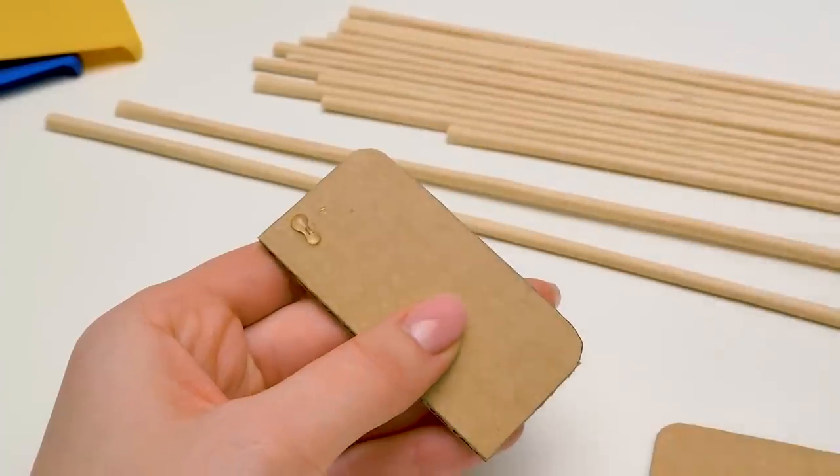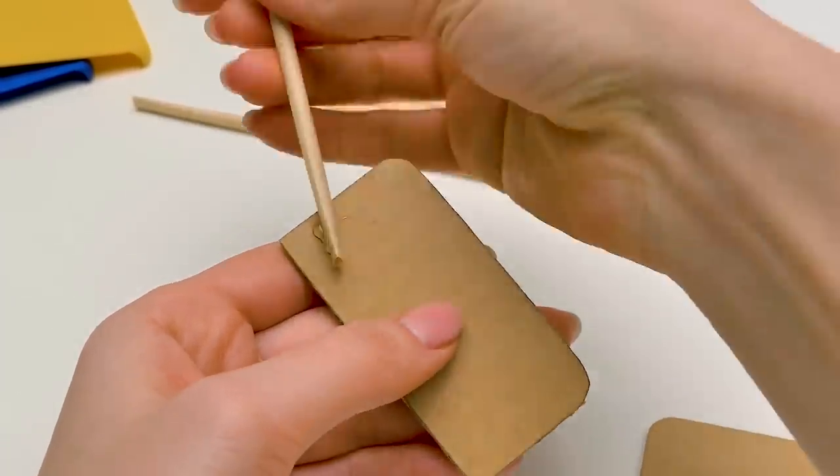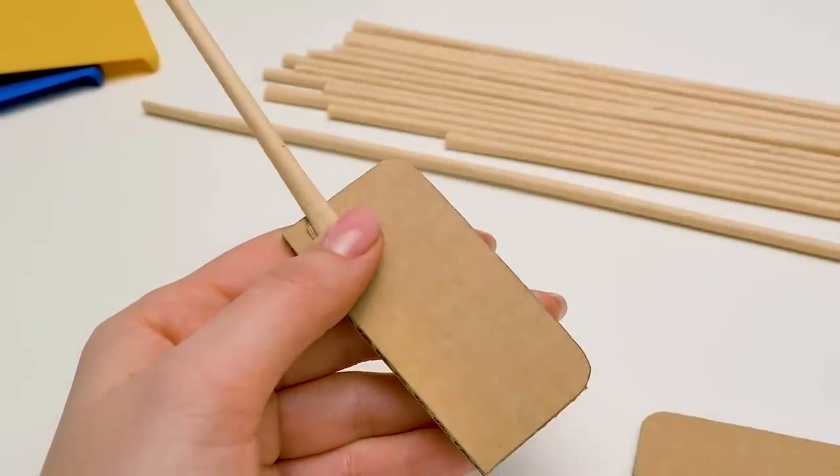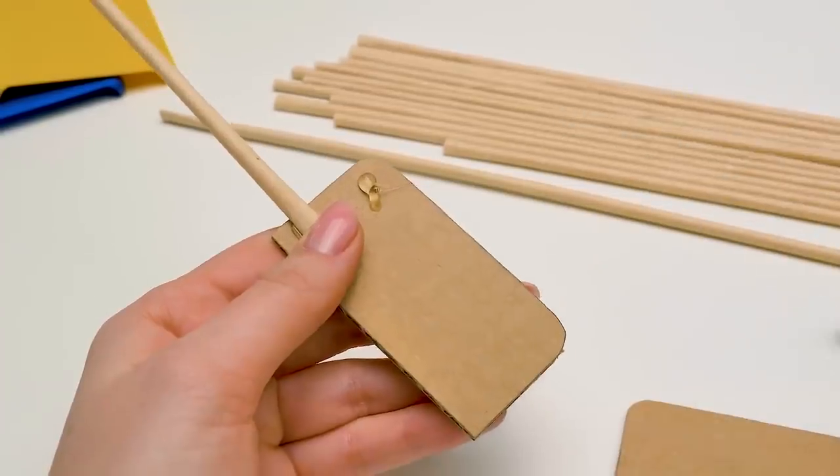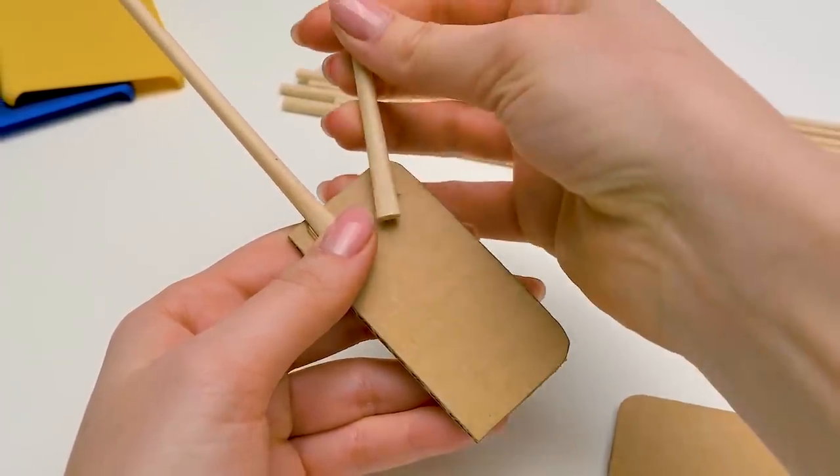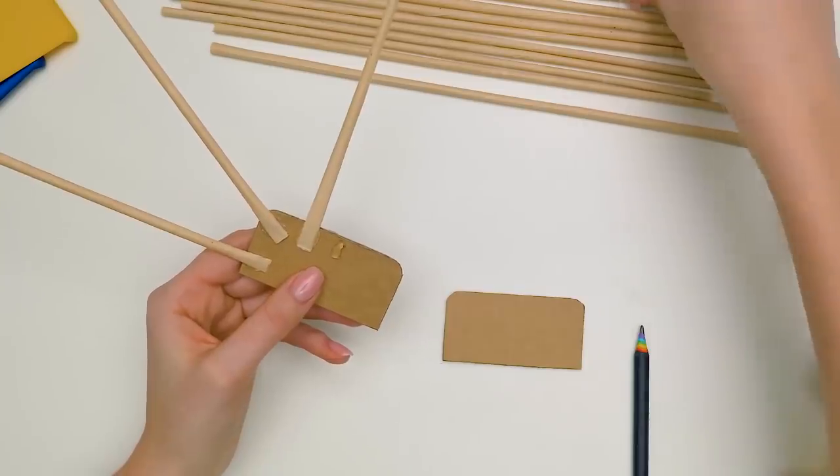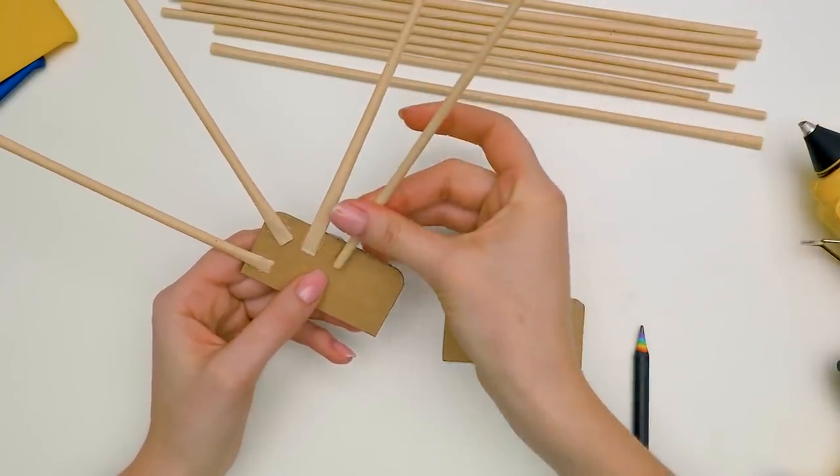Then apply some glue to one of the pieces. Just a bit. And glue one paper stick to it. Glue the next stick next to it. But make some space between them. See? Like that. Glue. And press. Glue. And press.